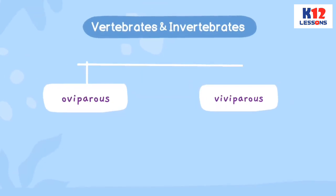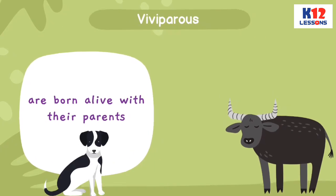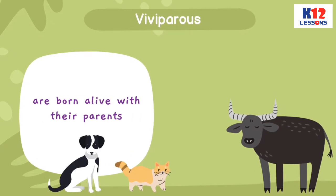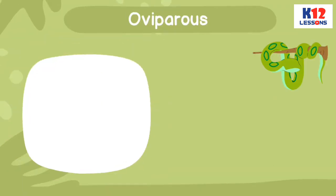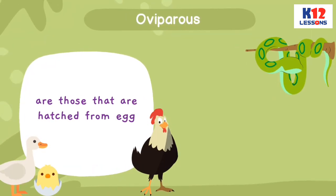They can be oviparous and viviparous. Viviparous animals are born alive with their parents, such as dogs, carabao, and cats. While oviparous animals are those that are hatched from eggs, such as chicken, duck, and snake.